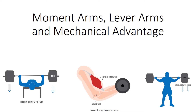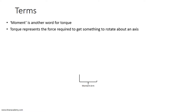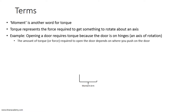I want to talk about moment arms, lever arms, and mechanical advantage. A moment is just another word for torque, which represents the amount of force needed to get something to rotate about an axis. To translate this to everyday life, opening a door requires torque because the door is on hinges — the hinge is the axis of rotation. The force required to open the door depends on where you exert your force on the door.